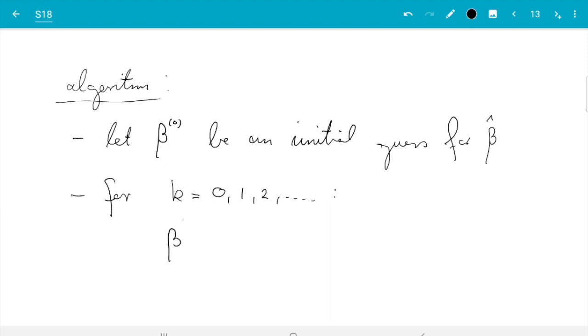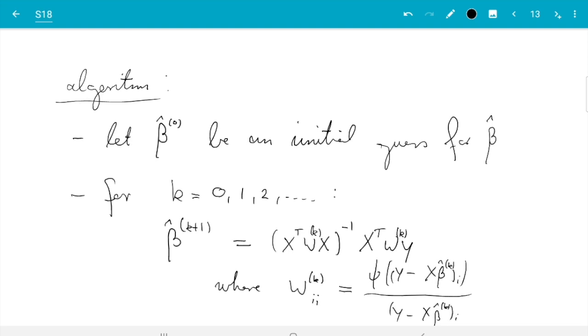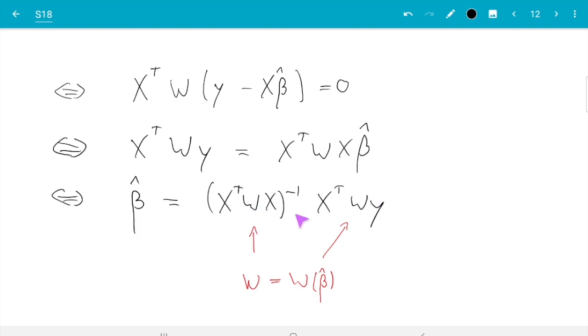Then we say beta k plus one. Maybe I write beta hat actually here because it's going to be beta hat. Beta hat k plus one is what I just wrote. X transpose w x inverse x transpose wy, where this k is computed using beta k. Let's call it wk, where wk row i column i is psi of y x beta hat k i's component divided by y minus x beta hat k, also i's component. The idea is that this should converge to a good value of beta hat. If you know a bit more about these things, you will recognize that equation.